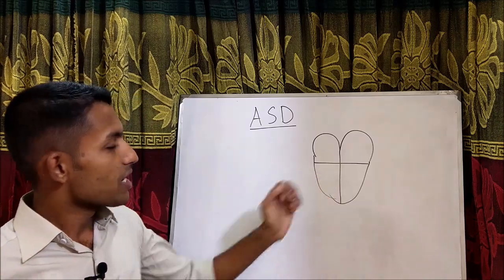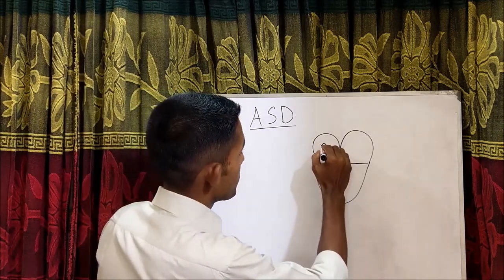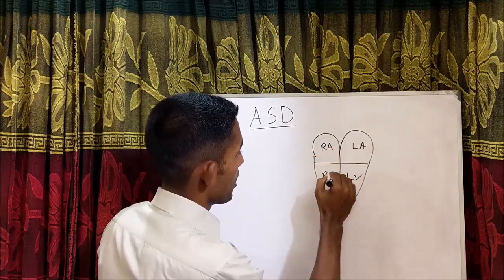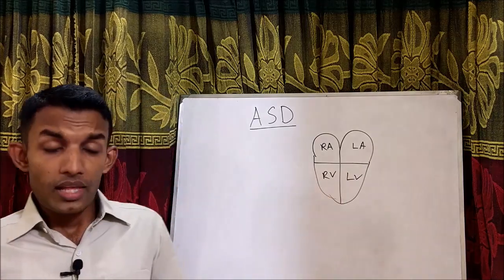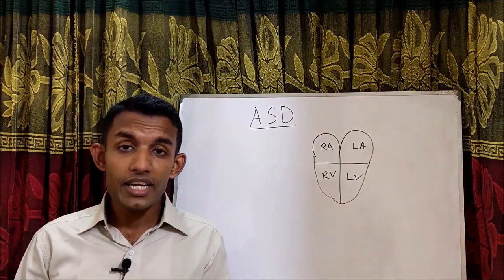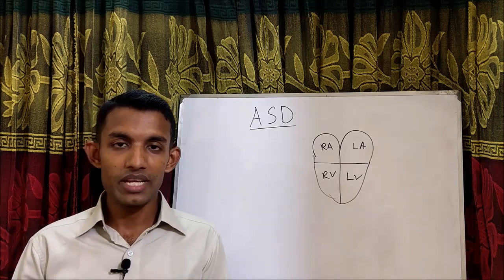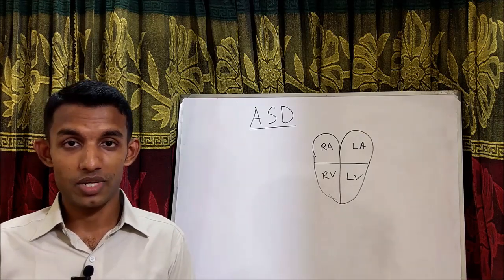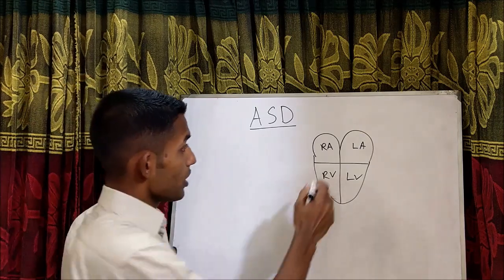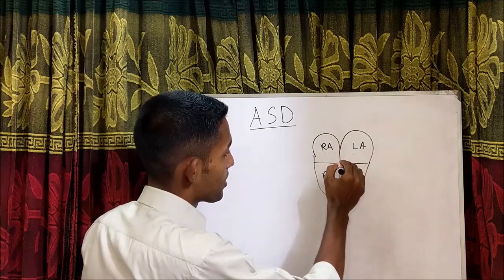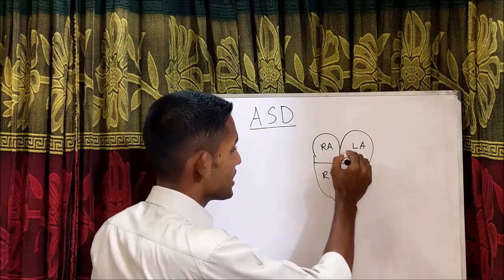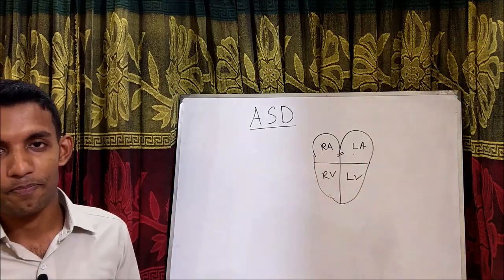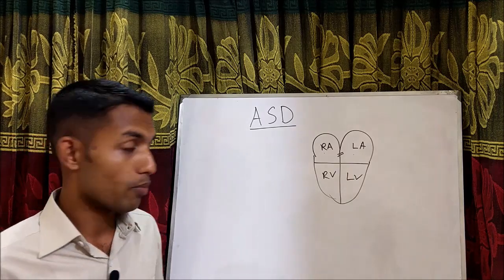This is a schematic diagram of the heart. Here there is right atrium, left atrium, left ventricle, right ventricle. ASD is a defect in the inter-atrial septum — simply a hole in the wall between two atria is called atrial septal defect. So in between the right atrium and left atrium there is an inter-atrial septum, and if there is any defect, any hole or opening, then it becomes an ASD.